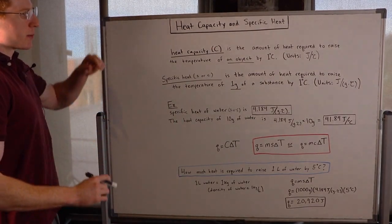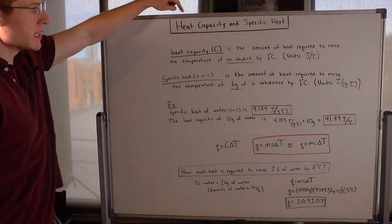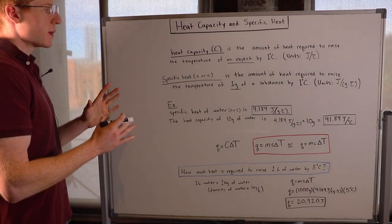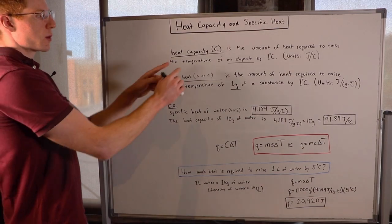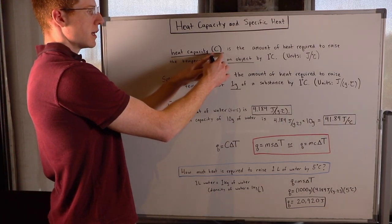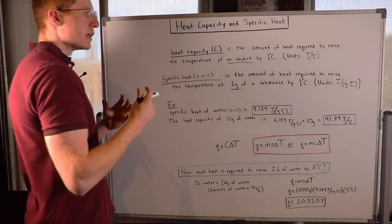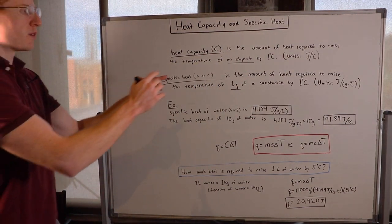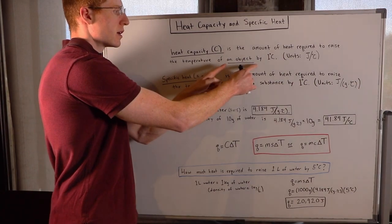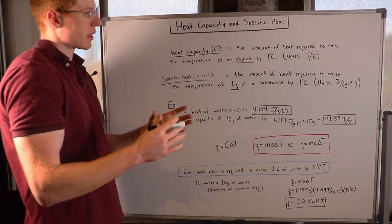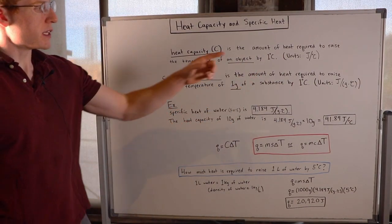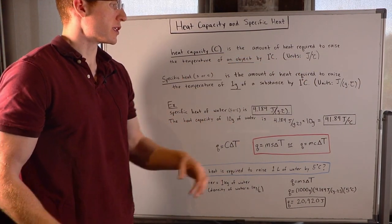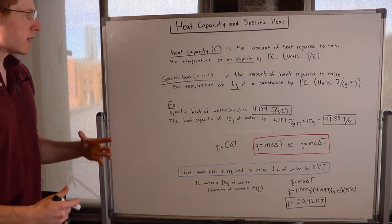In this video we're going to talk about heat capacity and specific heat. Heat capacity, denoted with a capital C, is the amount of heat required to raise the temperature of an object by one degree Celsius. Its units are joules per degree Celsius.